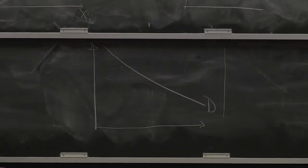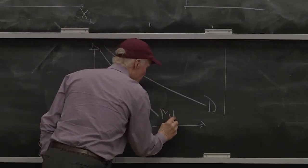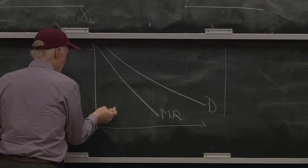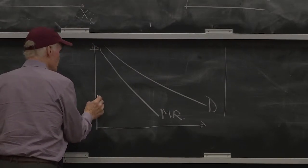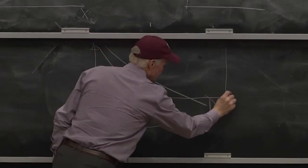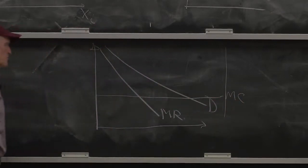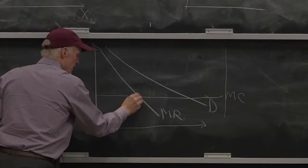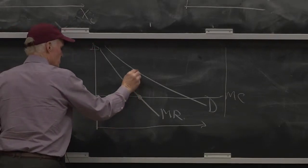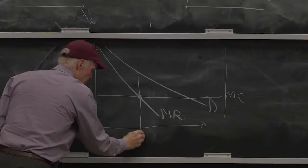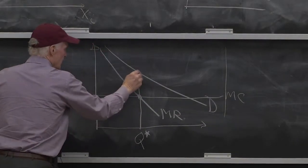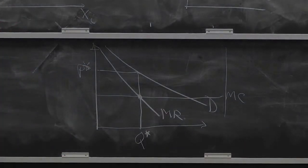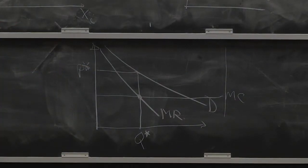It calculates the marginal revenue curve we learned in class, it then has marginal cost. I'll just for simplicity make marginal cost constant. Everybody says the profit-maximizing price is here, here's the quantity Q star, here's the profit-maximizing price P star. That's the monopoly equilibrium. Everybody understands that, right?